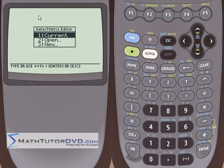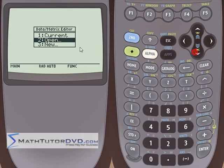So scroll down and look for data matrix editor. Go ahead and hit enter. And it's going to give us the option here of looking at a current matrix, opening a matrix that we have previously stored or creating a new matrix. Number two is to open a matrix you've already saved. Number three is to create a new matrix. So let's go to number three.